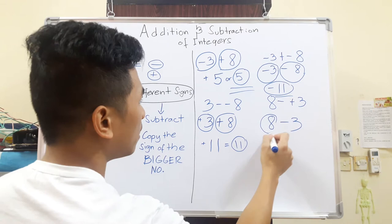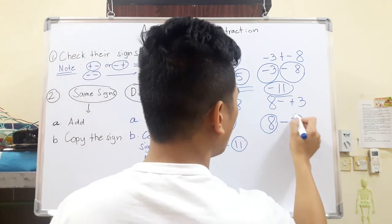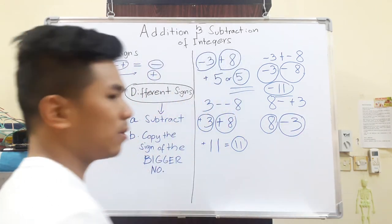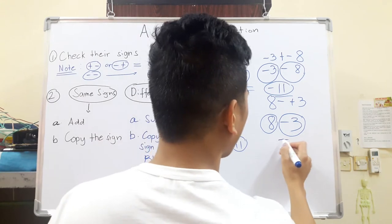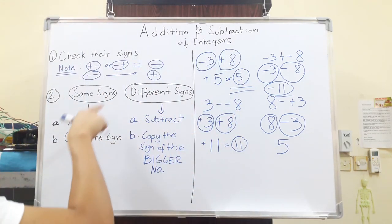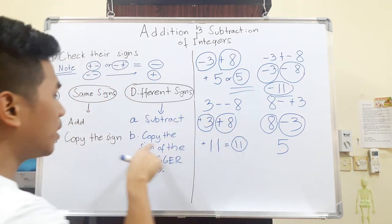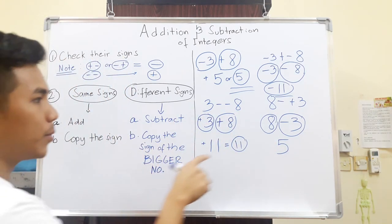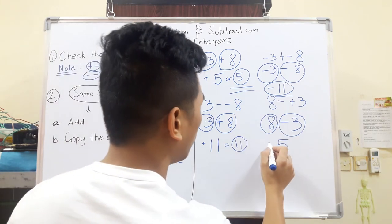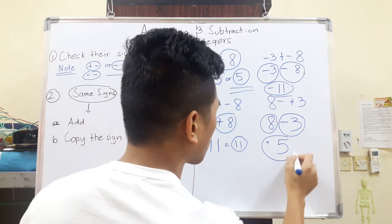Here, 8 and 3. As you can see, this is just like a normal subtraction, 8-3, which is 5. Now if you see the rules, the rule is different signs. Subtract them. 8 and 3. 8-3 is 5. Now, which one is bigger? Copy the sign of the bigger number. The bigger number is 8, which is positive. Therefore, it's positive 5.